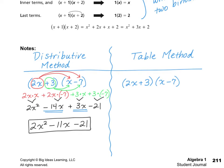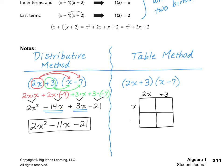Now let's take a look at the table method. We have a binomial here because there are two terms. So I'm going to draw a 2x2 table — I chose that because I have a binomial multiplied by a binomial, meaning I need 2 across and 2 down. I'm going to put 2x and plus 3 along the top, and on the side I'm going to put x minus 7. Those are my two binomials: 2x plus 3 across the top, and x minus 7 down the side.